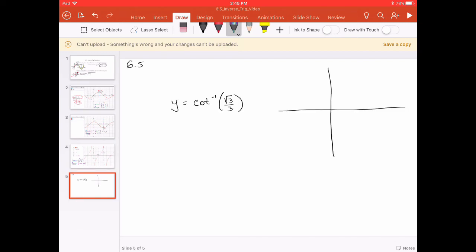Let's try an example together from 6.5. Asked to find the arc cotangent of √3 over 3. The first thing that I would do is I would rewrite this as arc tangent of the reciprocal, since those are reciprocal functions.